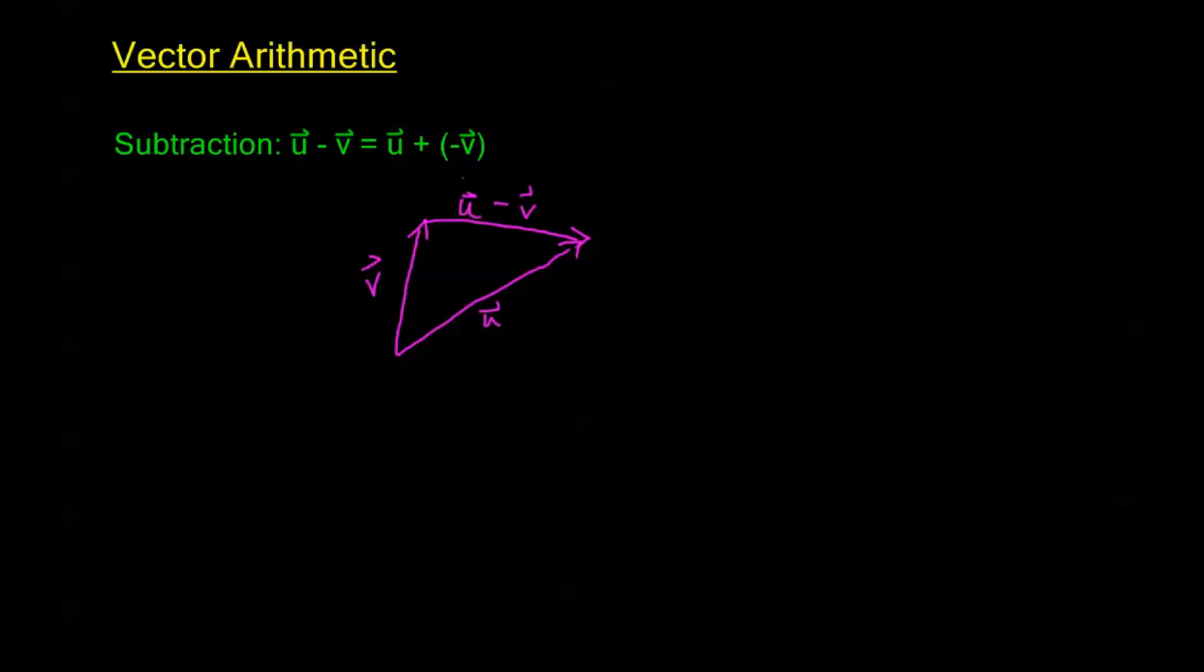Now the reason this is u minus v is if I fill this in as a rhombus, I draw some parallel line here, it's going to be my u, and I draw another parallel line here to create this rhombus. This line here is negative v, and this line up here is u. So what we're really doing is we're looking at the resultant displacement if I displace by u and then displace by negative v. That gives me a total displacement of this u minus v.